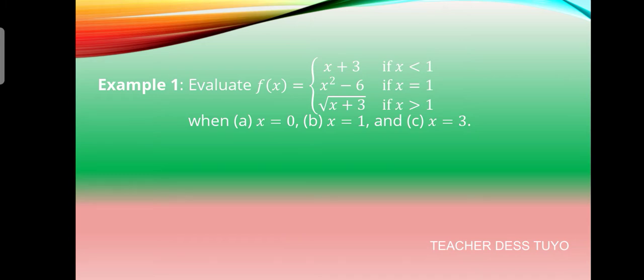For another example, consider the piecewise function: f(x) = x + 3 if x is less than 1; f(x) = x squared minus 6 if x equals 1; and f(x) = the square root of x + 3 if x is greater than 1. We need to find the values when: a) x equals 0, b) x equals 1, and c) x equals 3.